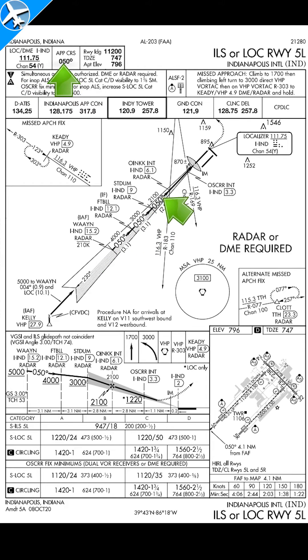The final approach course is 050. This is the length of the pavement you're landing on, but keep in mind if there's a displaced threshold, your usable distance may be significantly less.